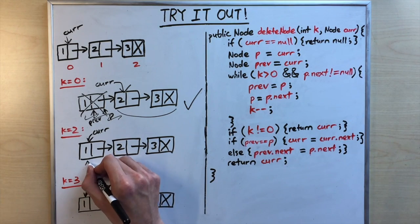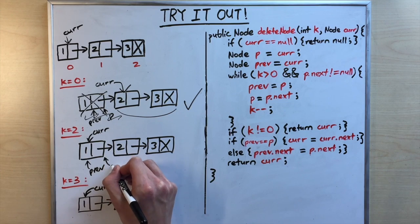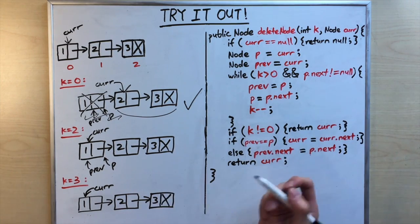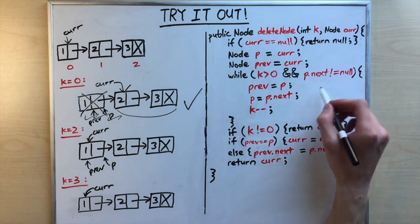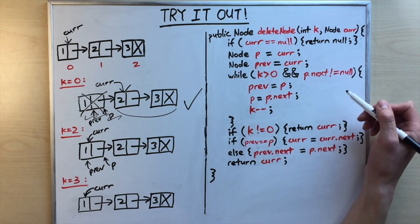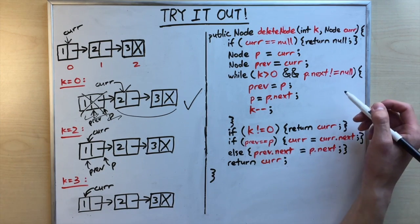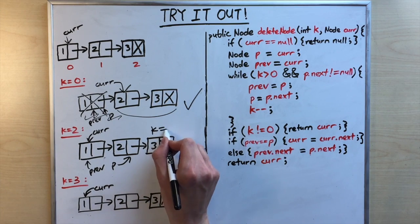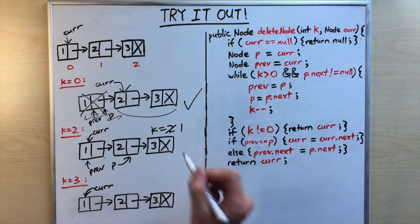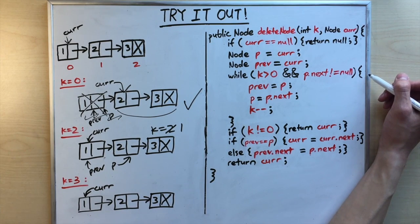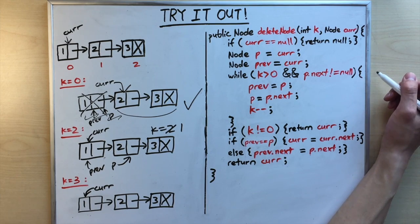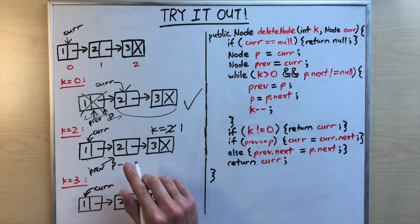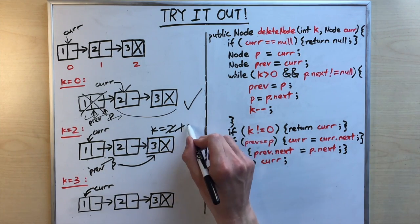For k equals two: p and prev both start at cur. The while loop runs twice — each iteration, prev moves to p, p advances one node, and k decrements by one. After two iterations, k equals zero and p points to the last node.